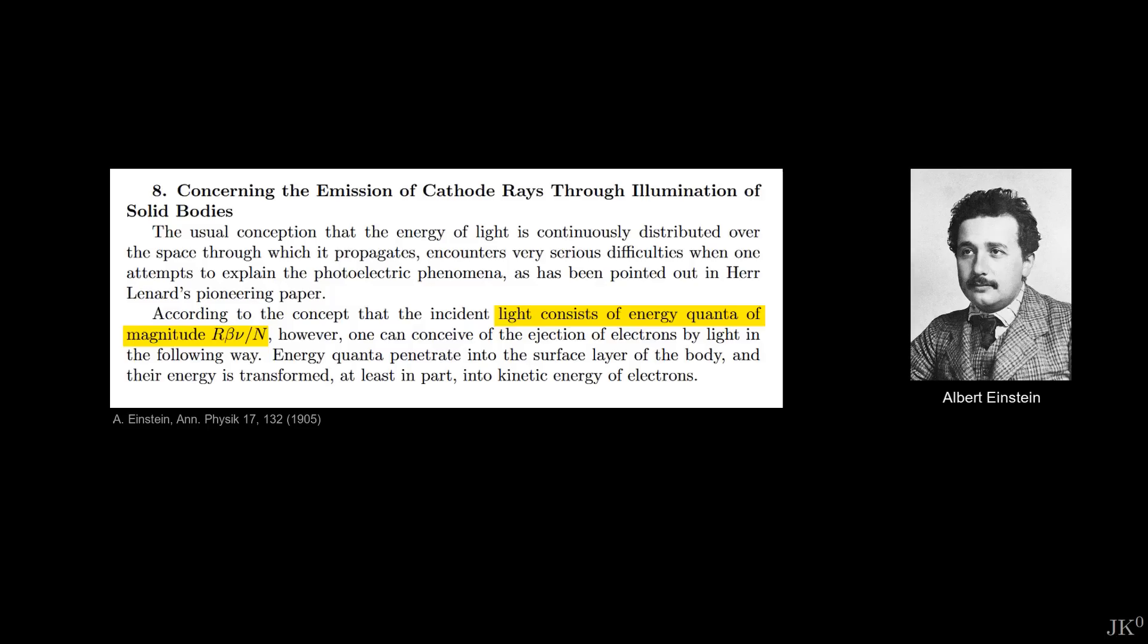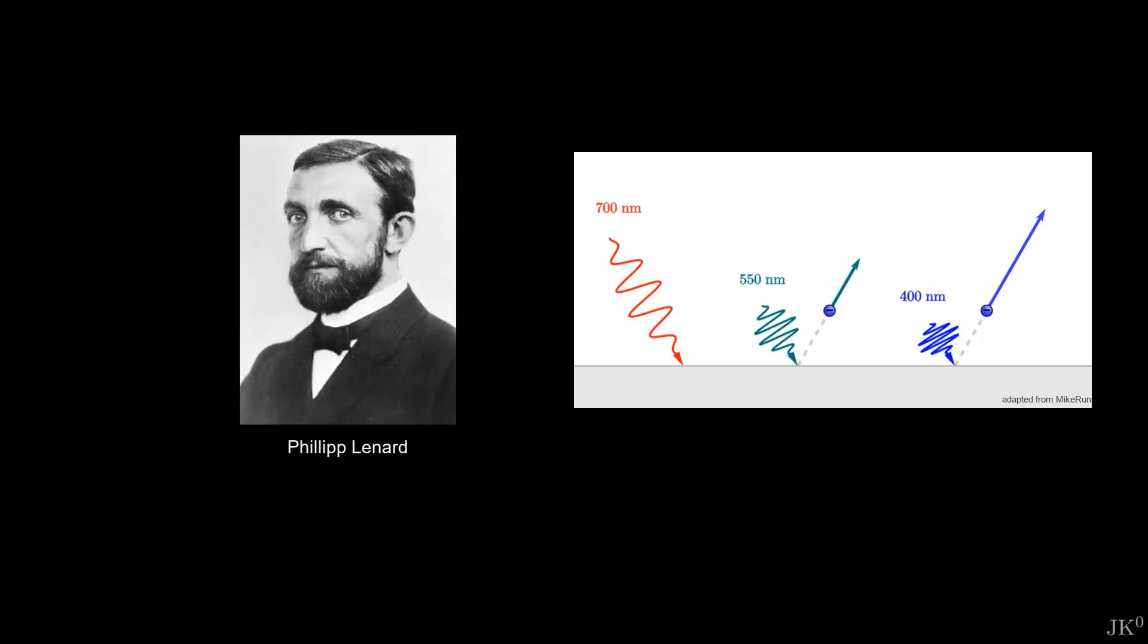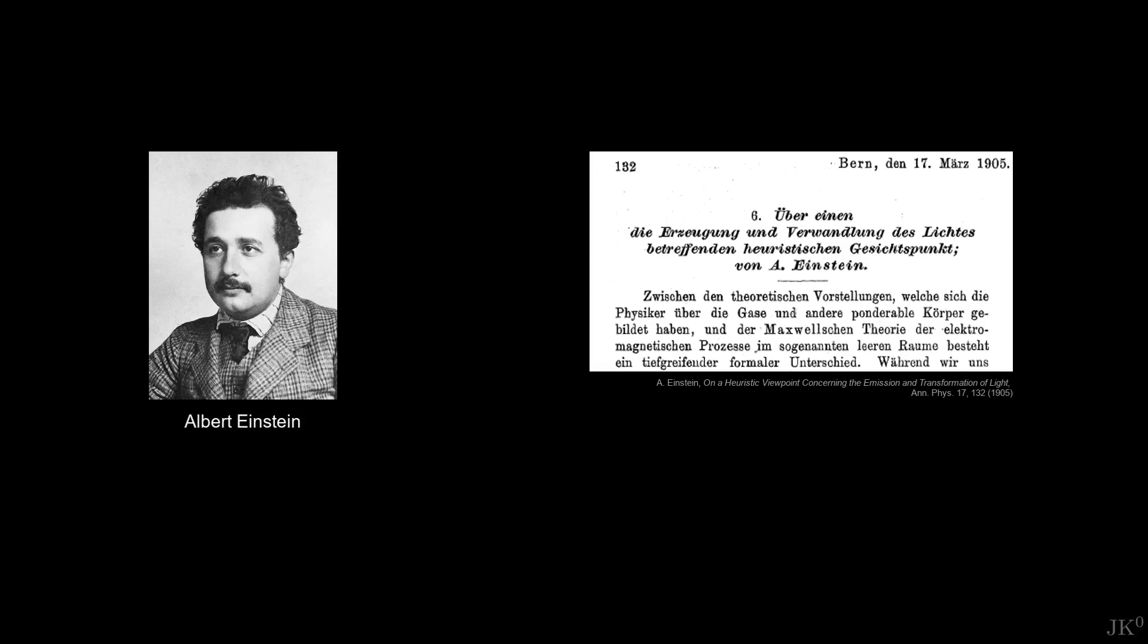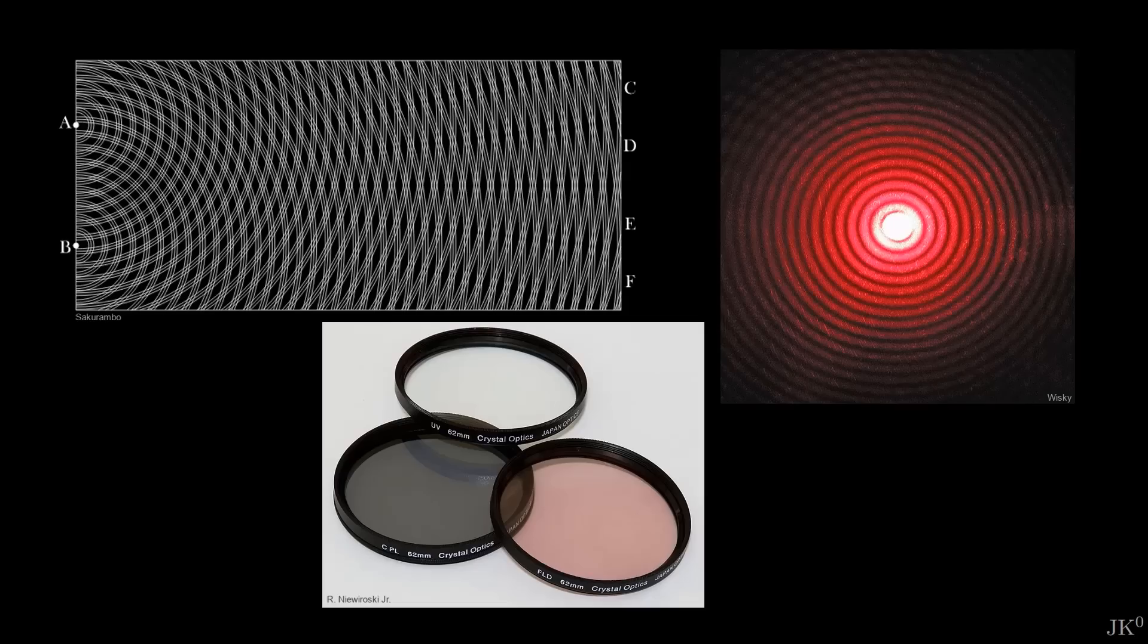Einstein proposed that light is emitted and absorbed in packages of energy h nu. He showed that this was a physically and mathematically acceptable idea, and solved the problems that Lenard observed in his experiments with the photoelectric effect. There was just one big problem with Einstein's proposal. Experiments showed that light had wave properties, in agreement with Maxwell's electromagnetic theory. The physics community saw no reason to abandon a successful theory verified by experiments.